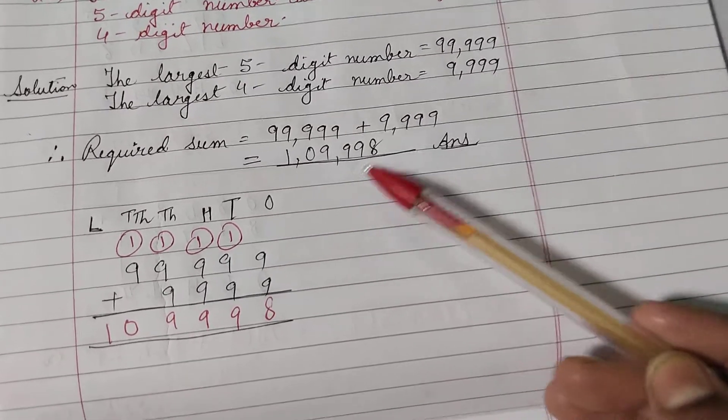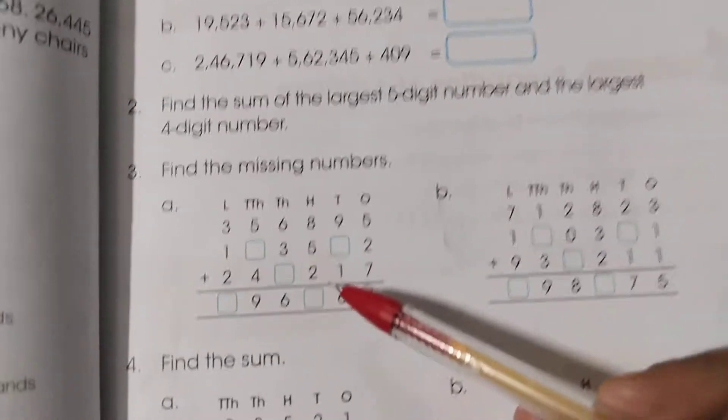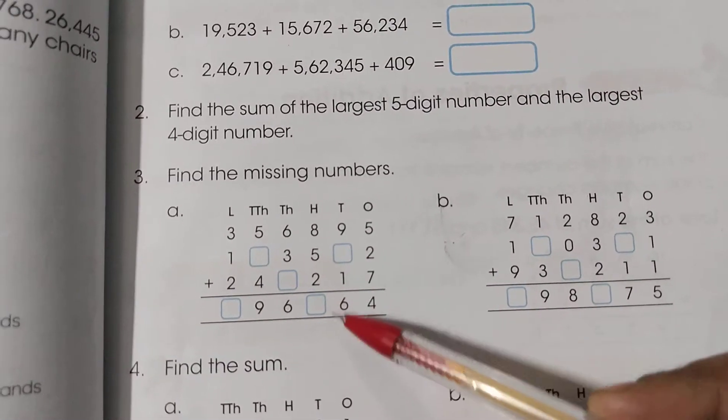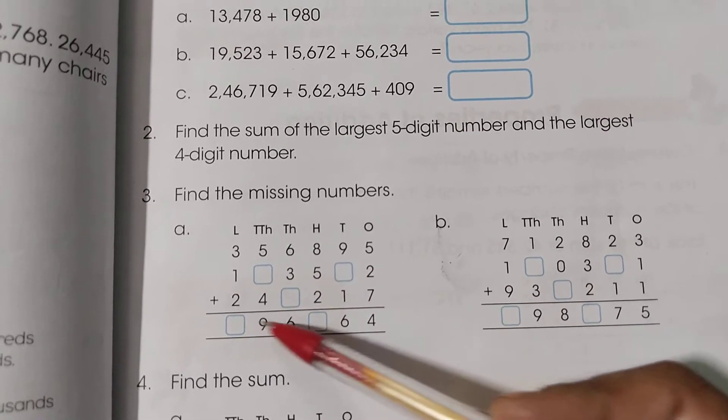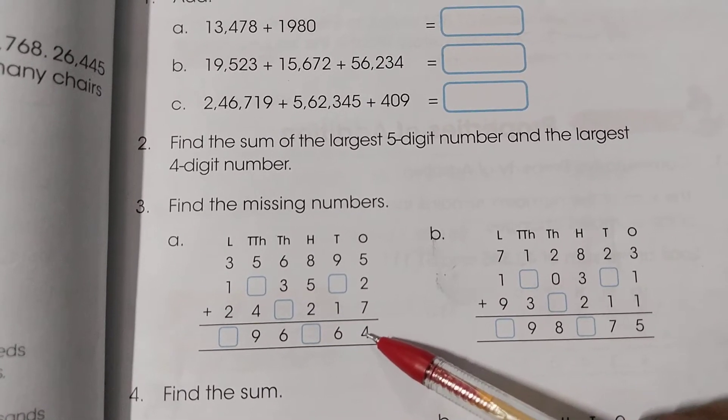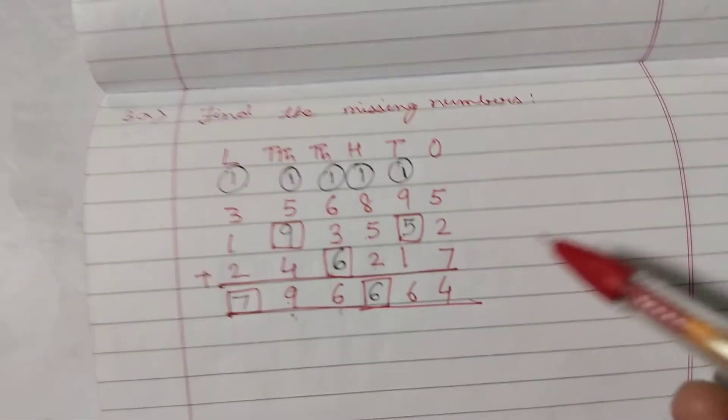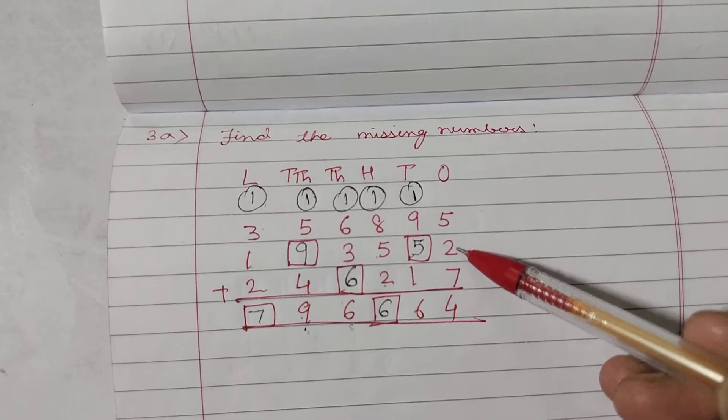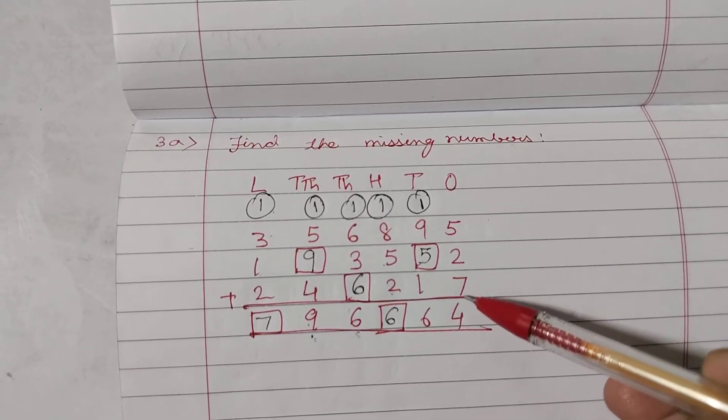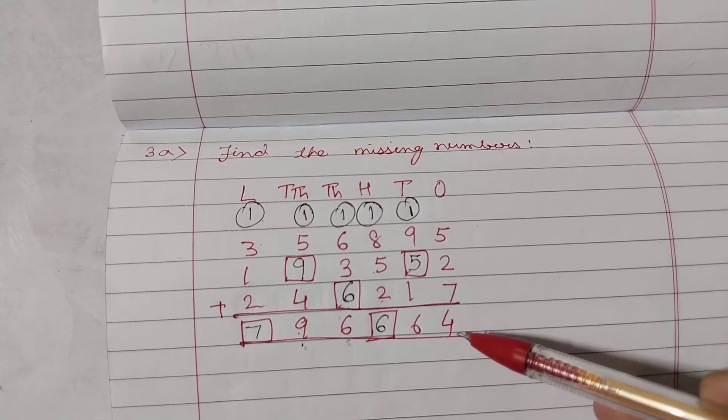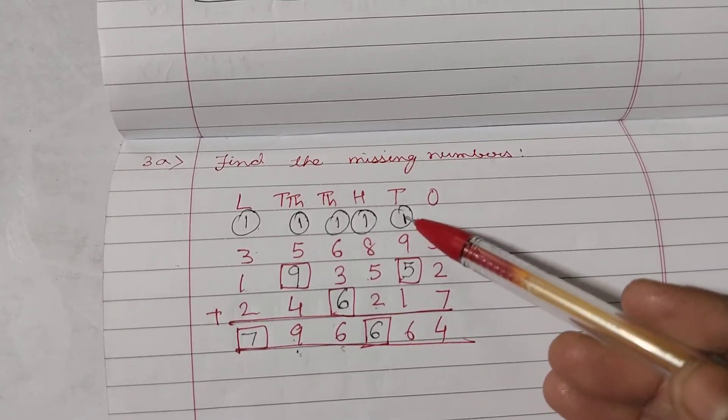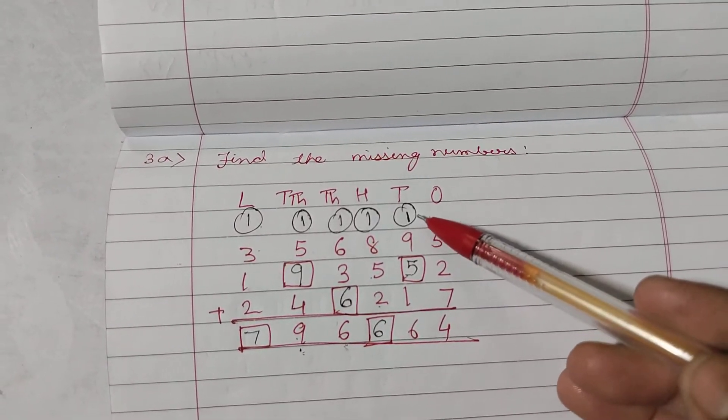Find the missing numbers. Children, in this type of questions, you can see few numbers are missing. So, you have to fill these boxes with the numbers. So, let's start, children. First question. Here is 5, 2 and 7. We are adding and we are getting here 14. So, write here 4 carry over 1.